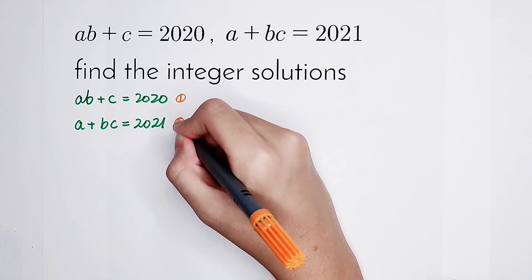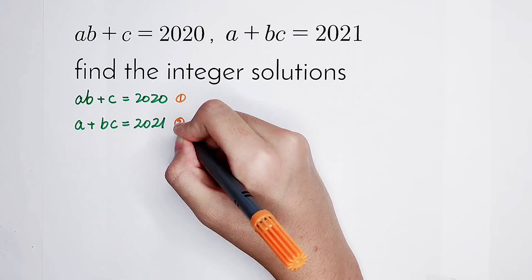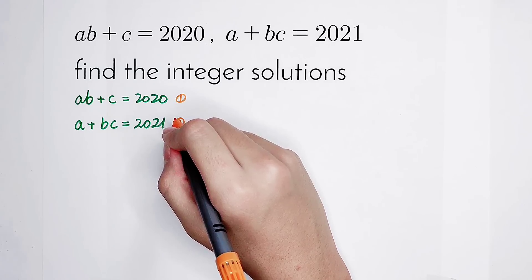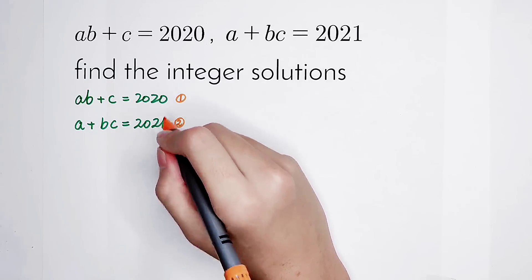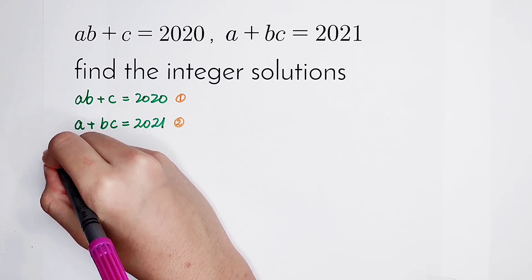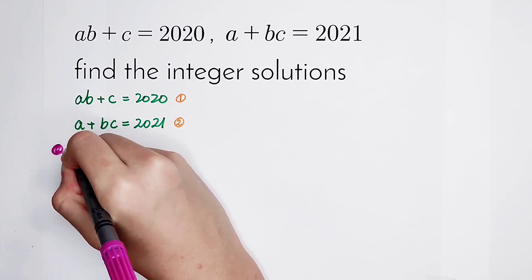That is, the second equation minus the first equation. We get the subtraction of these two equations. So the second equation minus the first equation.